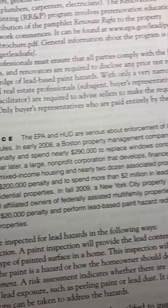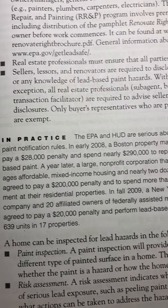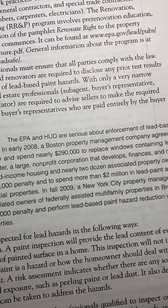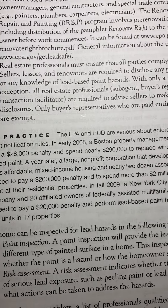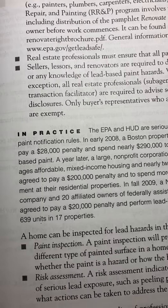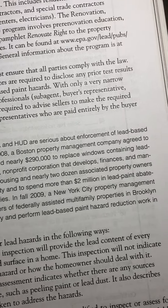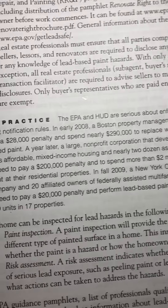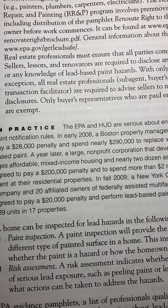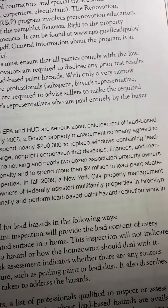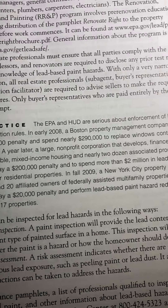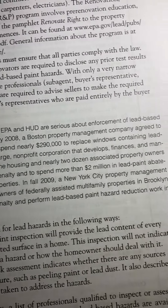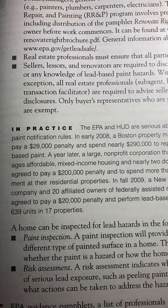In practice, the EPA and HUD are serious about enforcement of lead-based paint notification rules. In early 2008, a Boston property management company agreed to pay a $28,000 penalty and spend nearly $290,000 to replace windows containing lead-based paint. A year later, a large nonprofit corporation that develops, finances, and manages affordable mixed-income housing and nearly two dozen associated property owners agreed to pay a $200,000 penalty and spend more than $2 million in lead-based abatement at their residential properties. In fall 2009, a New York City property management company and 20 affiliated owners of federally assisted multi-family properties in Brooklyn agreed to pay a $20,000 penalty and perform lead-based paint hazard reduction work in 639 units in 17 properties.